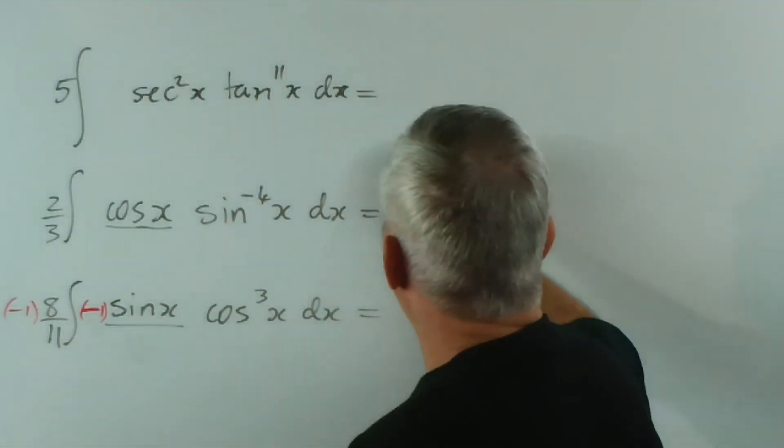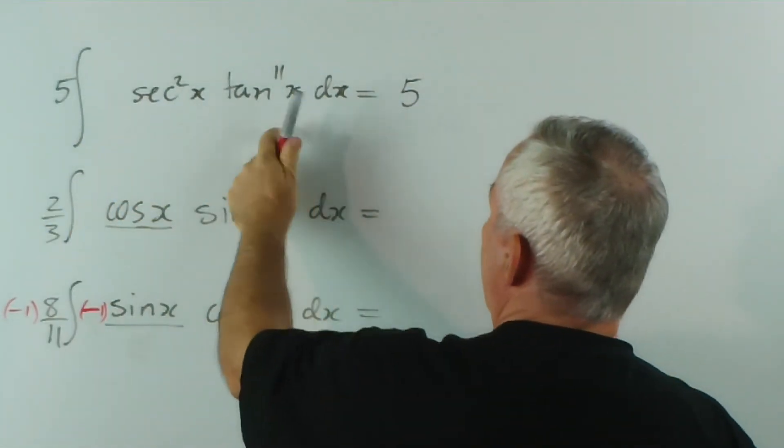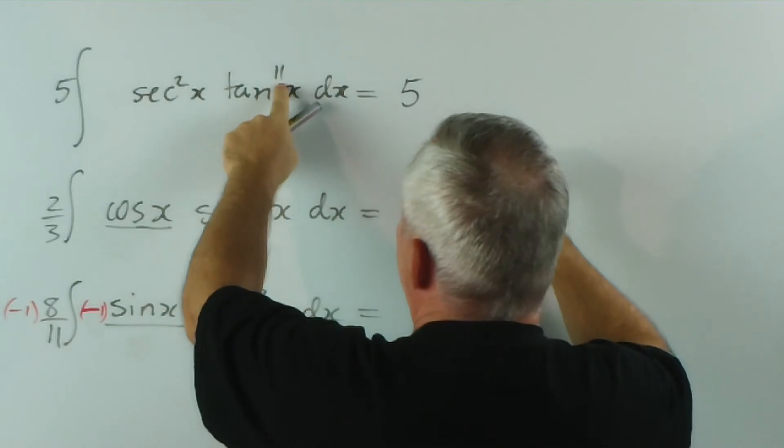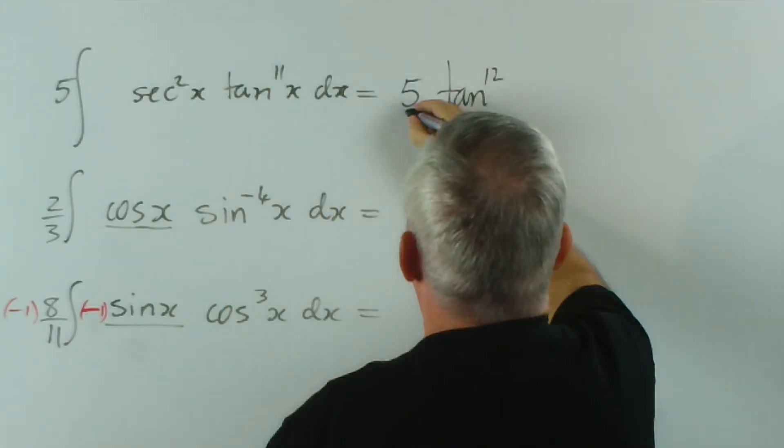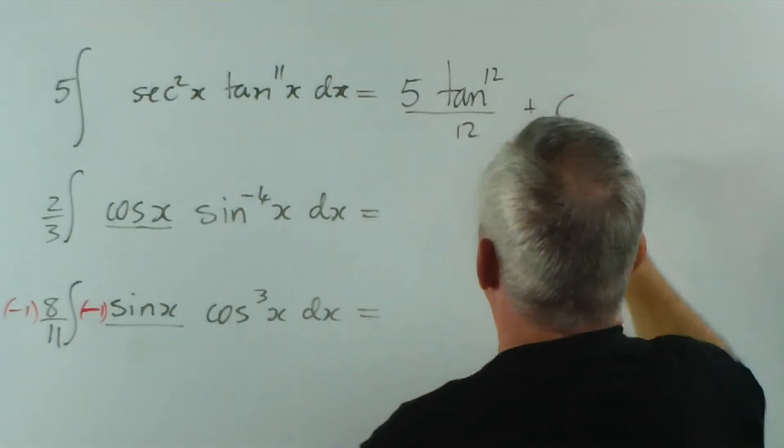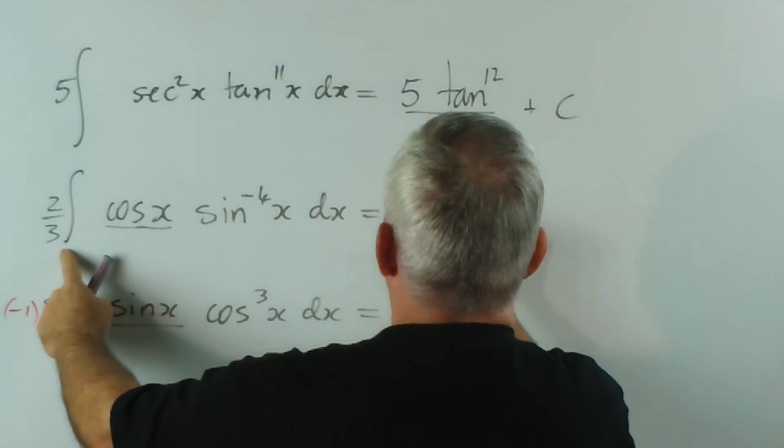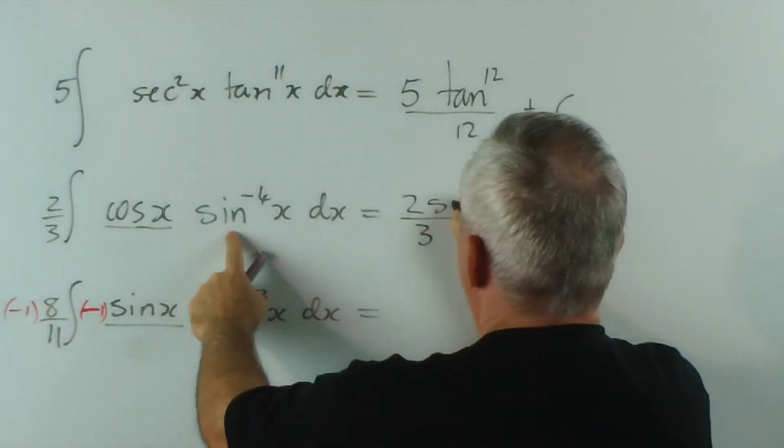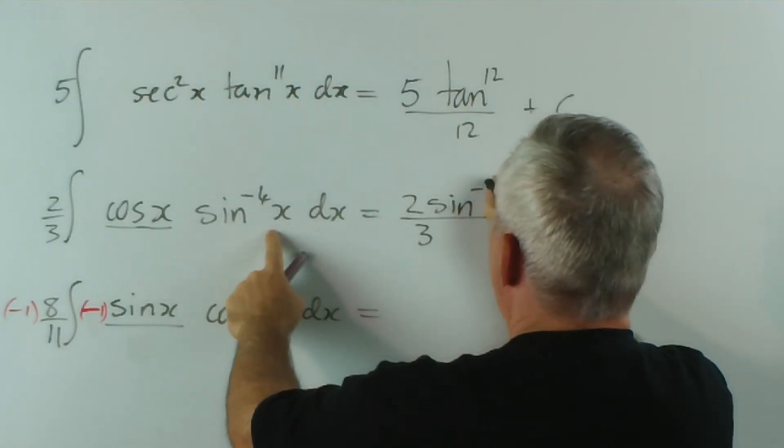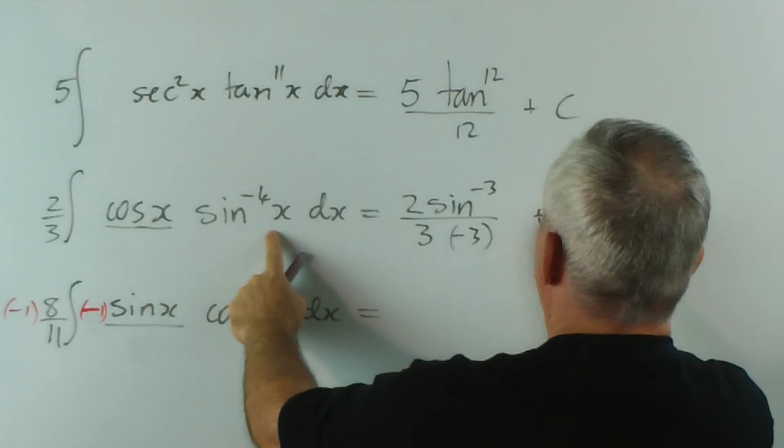So the integral will be 5, and this is the exact pattern we require. So we write tan x to one higher power over 12 plus a constant.